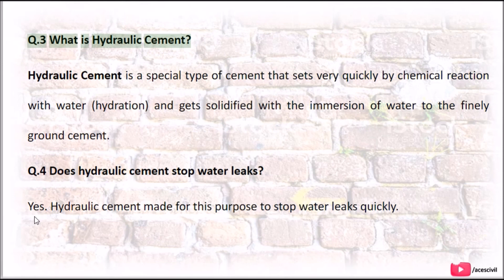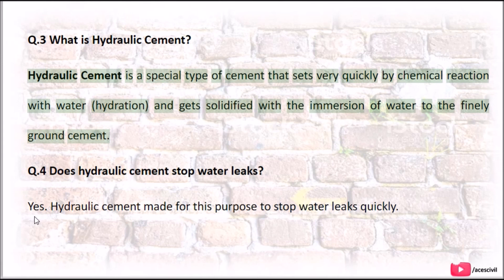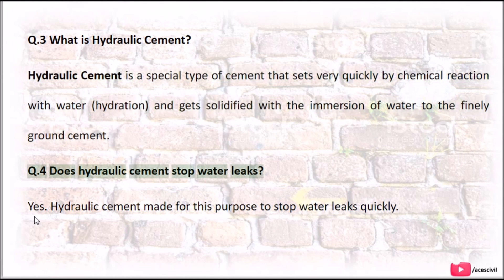Q3: What is hydraulic cement? Hydraulic cement is a special type of cement that sets very quickly by chemical reaction with water — hydration — and gets solidified with the immersion of water to the finely ground cement. Q4: Does hydraulic cement stop water leaks? Hydraulic cement is made for this purpose — to stop water leaks quickly.